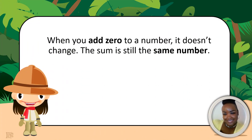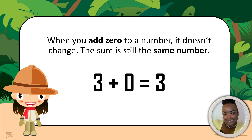When you add 0 to a number, it doesn't change. The sum is still the same number. Here's an example: 3 plus 0 equals 3. Don't you see that even though we added a 0, it still remained the same? Here are some more examples.